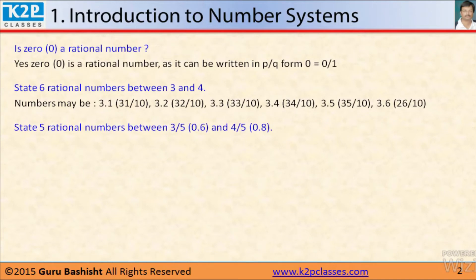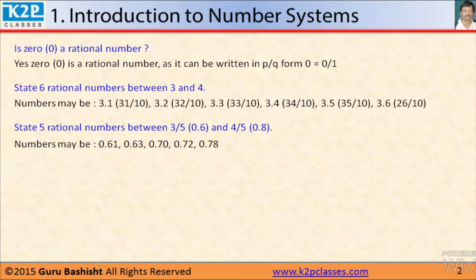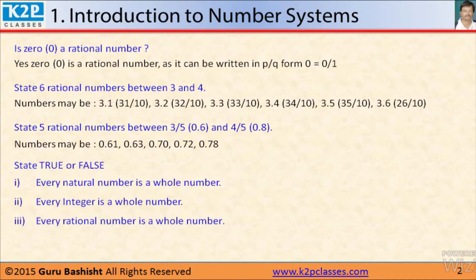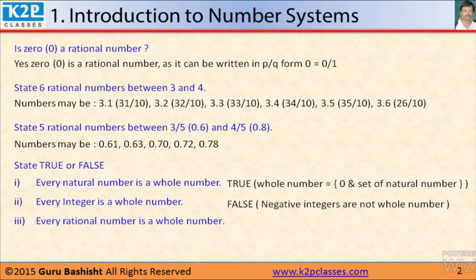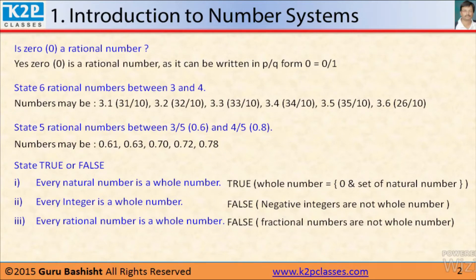State 5 rational numbers between 3 by 5 and 4 by 5, that is 0.6 and 0.8. Again, there are infinite rational numbers between 0.6 and 0.8. Numbers may be 0.61, 0.63 and so on. Now state true and false: every natural number is a whole number — yes, that is correct. Every integer is a whole number — no, this is wrong because negative numbers are not whole numbers. Every rational number is a whole number — again, it is not true.